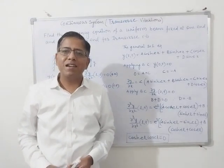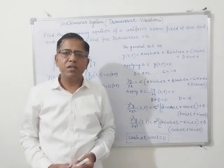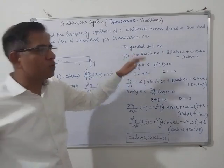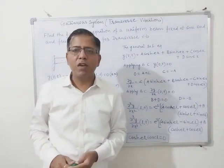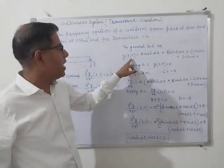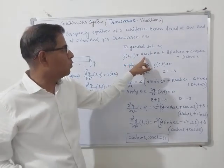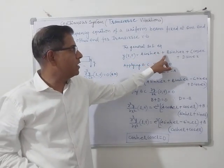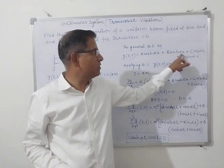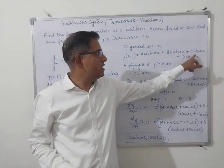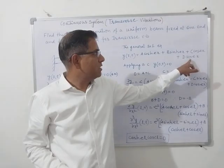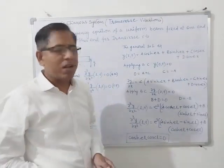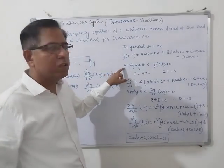The general solution equation for transverse vibration is given by y(x, t) equals A hyperbolic cosine of cx, plus B hyperbolic sine of cx, plus C cosine cx, plus D sine cx. This is the general solution equation for transverse vibration.